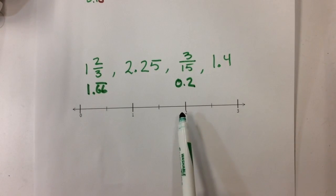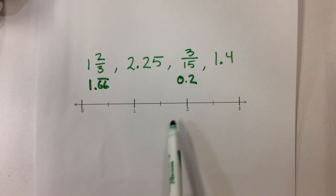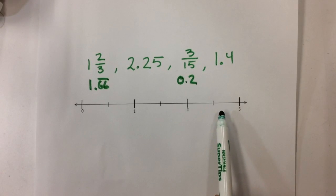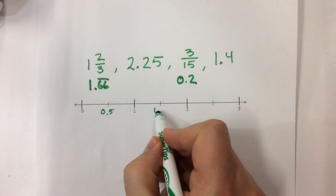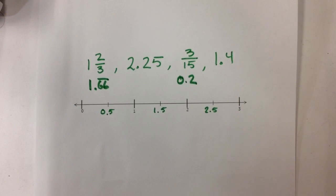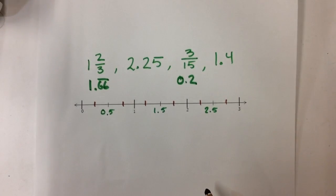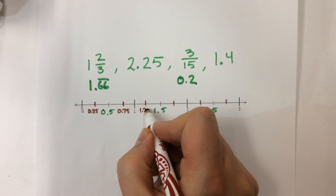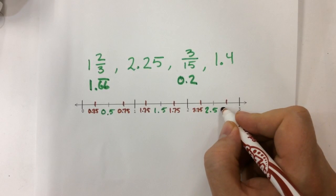I'm going to look at this number line just like in the last problem. It goes from 0 to 1, 1 to 2, and 2 to 3. I notice a line is halfway between each of these integers, so those must be 0.5, 1.5, and 2.5. If I'm really diligent, I can also identify the quarter marks: 0.25, 0.75, 1.25, 1.75, 2.25, and 2.75 — think of it like quarters of a dollar. That gives me more reference points when placing my numbers.